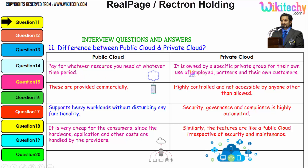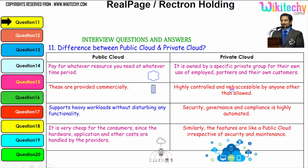The private cloud is owned by a specific private group for their own use — for employed partners and their own customers. These are provided commercially. It is highly controlled and not accessible to anyone other than those allowed. It supports heavy workloads without disturbing any functionality. Security, governance and compliance is highly automated.